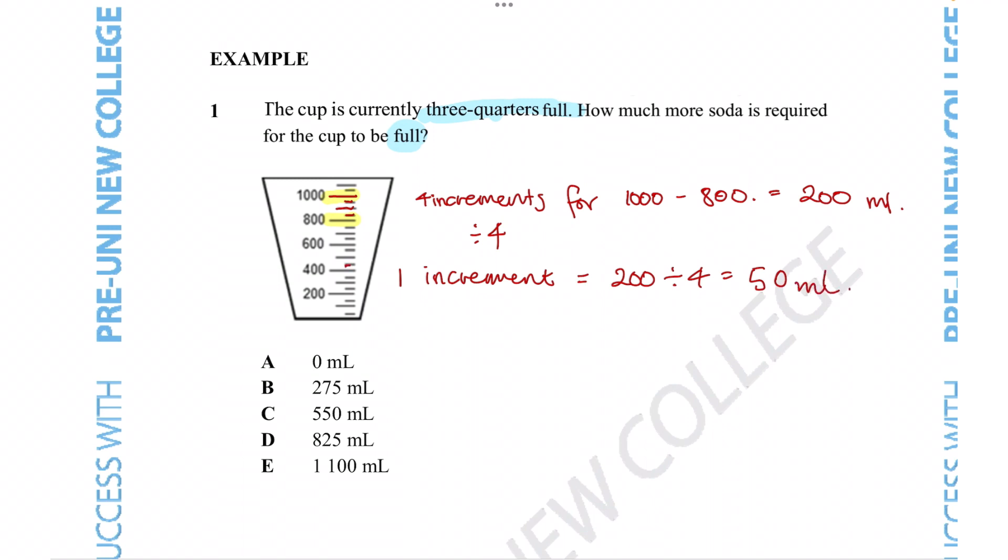So that means every one of these lines has to equal 50 milliliters. So this would be 1050, this would be 1100. So that is the last increment in this cup. So that must be how full it can get at full capacity. So if we have the full capacity of this cup as being 1100 milliliters, we can then carry out the question to completion.